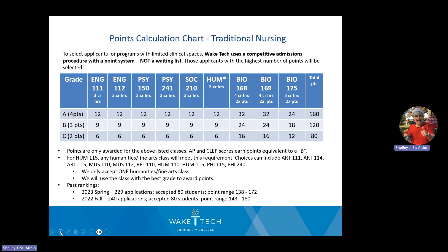Looking at past rankings for the nursing program: nursing receives over 200 applications. We accepted 80. The point range was 138 to 172 in spring 2023 and 143 to 180 in fall 2022. Points higher than the grade total come from the TEAS test. A range of 138 to 148 puts you in an A/B range — if you have all classes completed with B's, that's about 120 points. You need roughly an A/B average to be competitive for the nursing program.